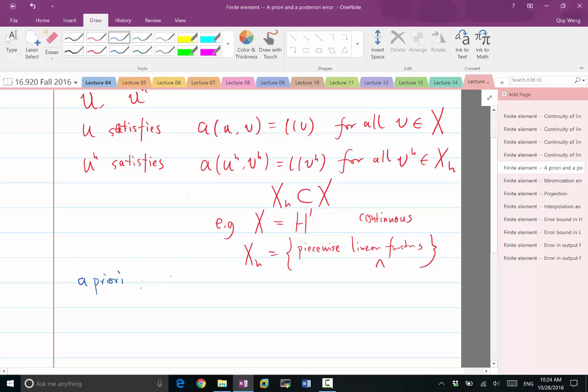One type is a priori error estimate, to estimate the difference between U and UH in a certain norm, usually in the norm of the function space X.